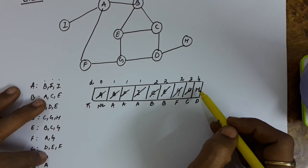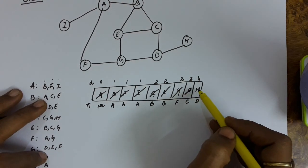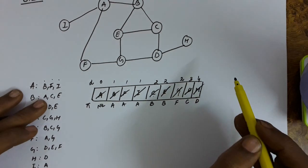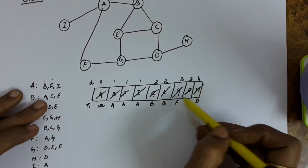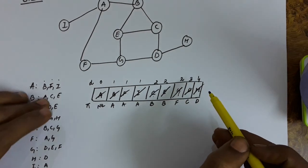Then the connections from H. Only D. So D was already there in the queue sometimes. So remove this H. So now the queue is empty. The process ends up here.